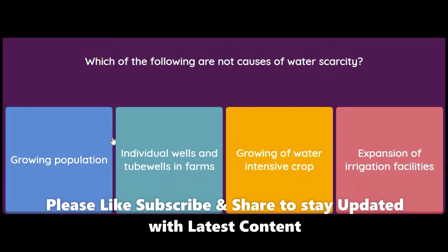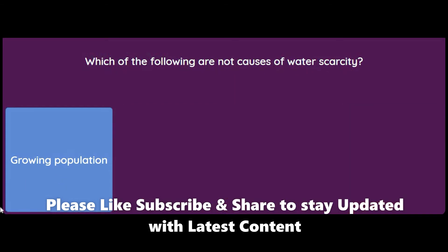Which of the following are NOT causes of water scarcity? The options are: growing population, individual wells and tube wells in farms, growing water-intensive crops, or expansion of irrigation facilities. Wells and tube wells lower the water level, water-intensive crops consume more water, and expanding irrigation uses more water — but growing population alone does not directly reduce water availability. So the answer is growing population.